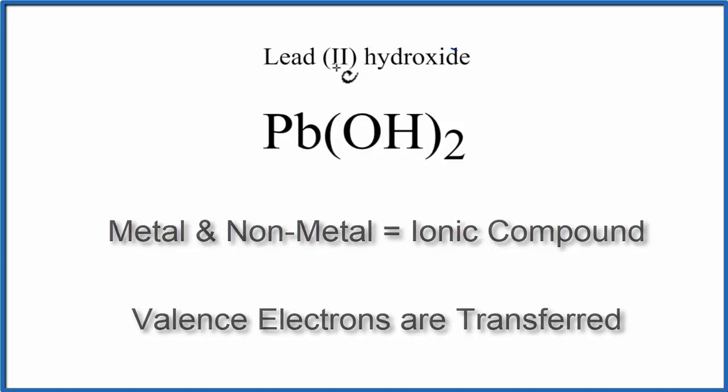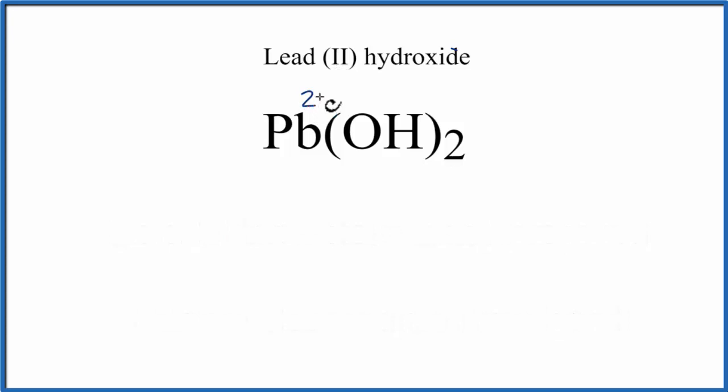We can see from the name lead-2 that lead has a 2-plus charge, and then we can look up the hydroxide ion on a table of common polyatomic ions, it has a 1-minus charge. So 2 times the 1-minus, that gives this a 2-minus charge, and that cancels out the 2-plus, so it's a neutral compound.